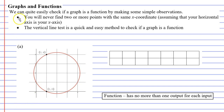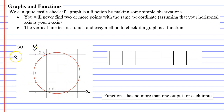If your graph is a function, you will never find two or more points with the same x coordinate. We're assuming that the horizontal axis is the x-axis — this is not always the case, but most often the horizontal axis is x and the vertical axis is y. You may notice that I've labeled two points on the circle below: (1, 0) and (1, 4).